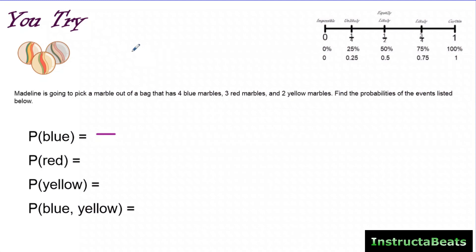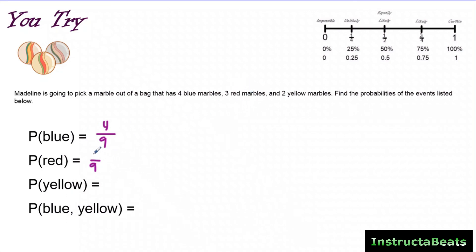The probability that she picks a blue marble — first figure out the total outcomes. She has four blue, three red, and two yellow marbles, so there are nine total outcomes. There are four ways she could pick a blue marble, so the probability for blue is four-ninths. The probability for red — denominator is still nine, there are three red marbles — so the probability is three-ninths, simplified to one-third, or about 33.3%. Probability for yellow — nine total outcomes, two different ways it could be yellow — so the probability is two-ninths.